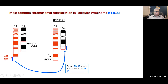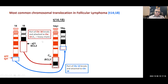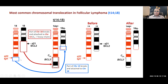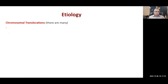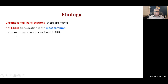This is before and after — these are the normal chromosomes and these are the altered chromosomes. What has happened is that the IgH heavy chain region, which is produced in very large quantities in B cells because they make antibodies, broke away and its place was taken by the BCL2 gene. There are many chromosomal translocations. The t(14;18) translocation is the most common chromosomal abnormality found in non-Hodgkin's lymphomas, occurring in 85% of follicular lymphomas and 25% of higher-grade lymphomas.